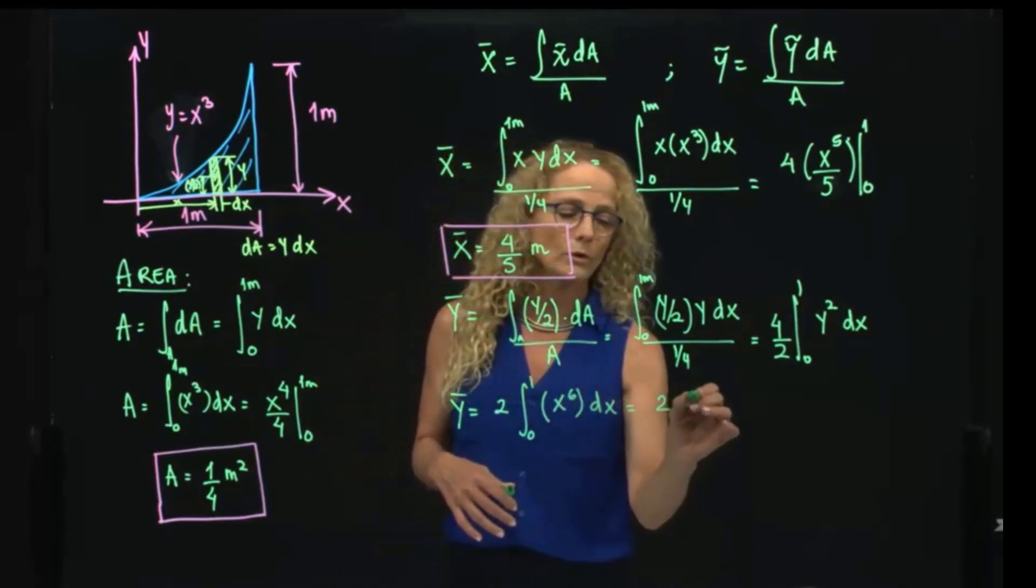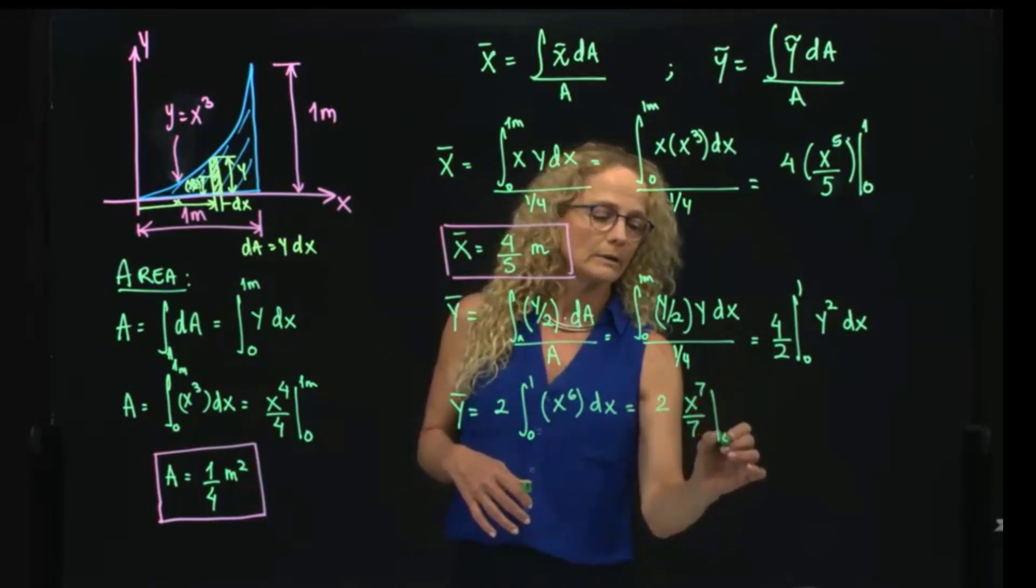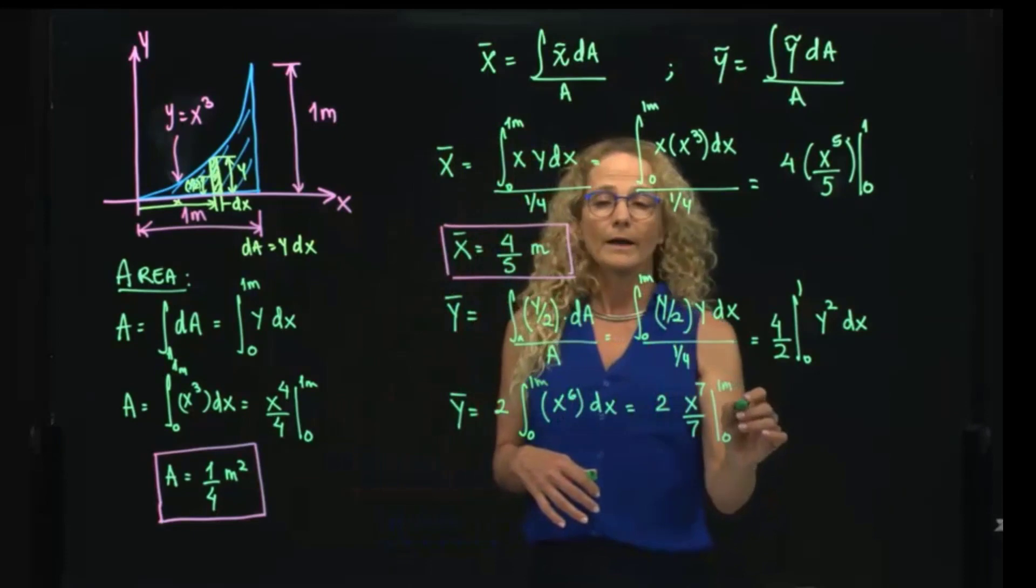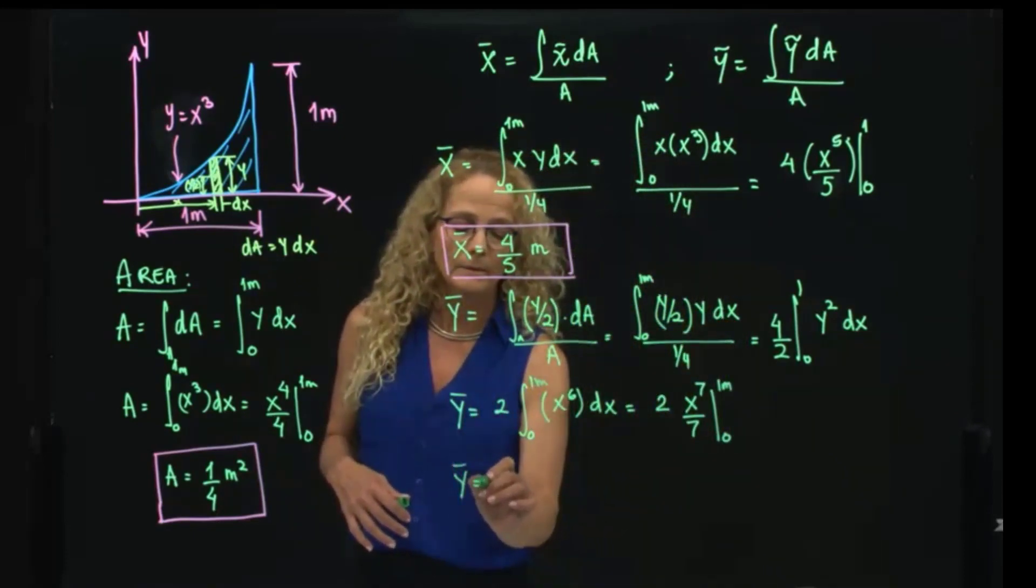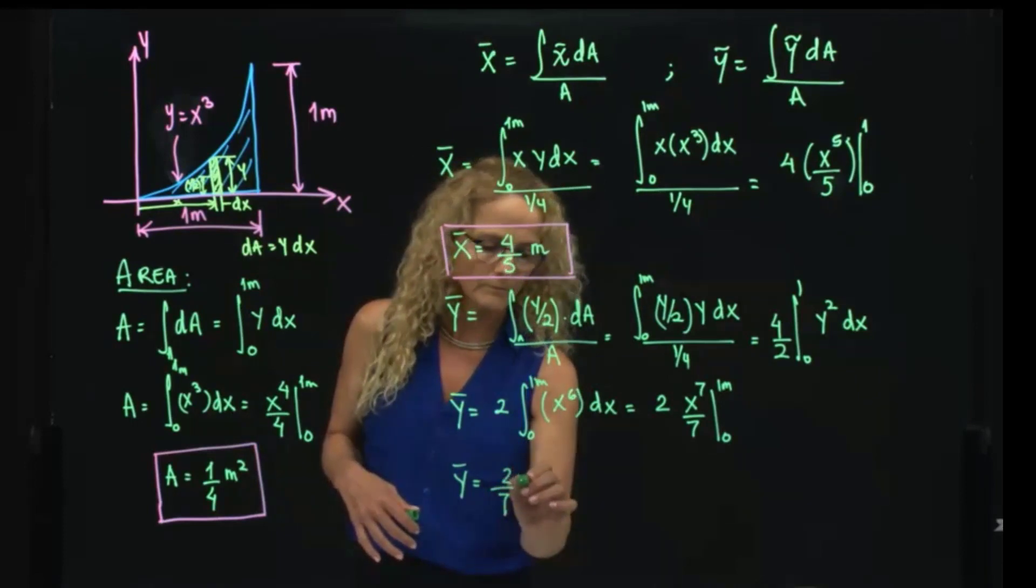Therefore, this is 2x to the 7 over 7 evaluated between 0 and 1 meters. So finally, I got that my ȳ would be 2 over 7 meters.